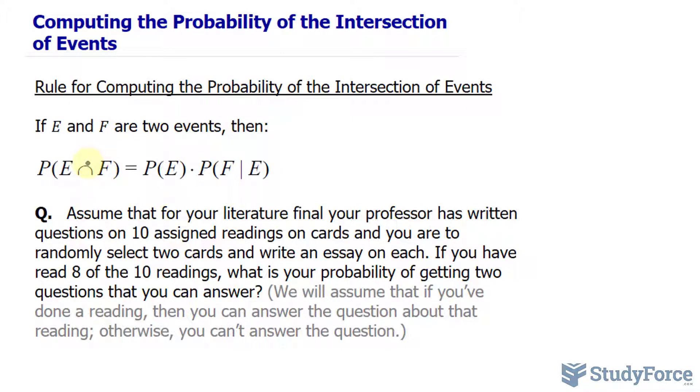To do this, we find the probability of event E and we multiply that to the probability of F given that E has already occurred, so the conditional probability.